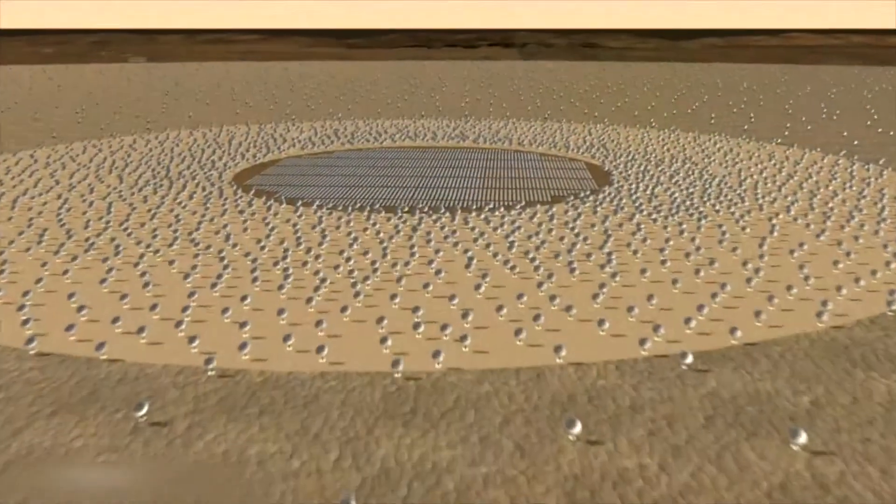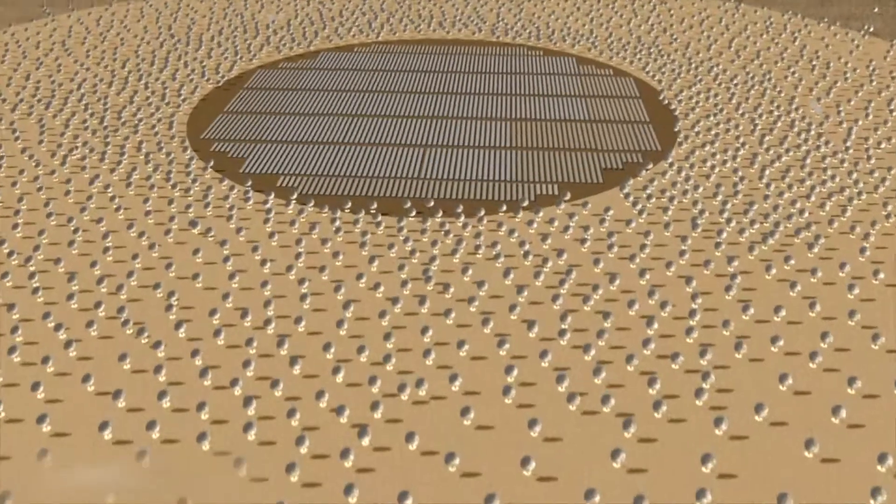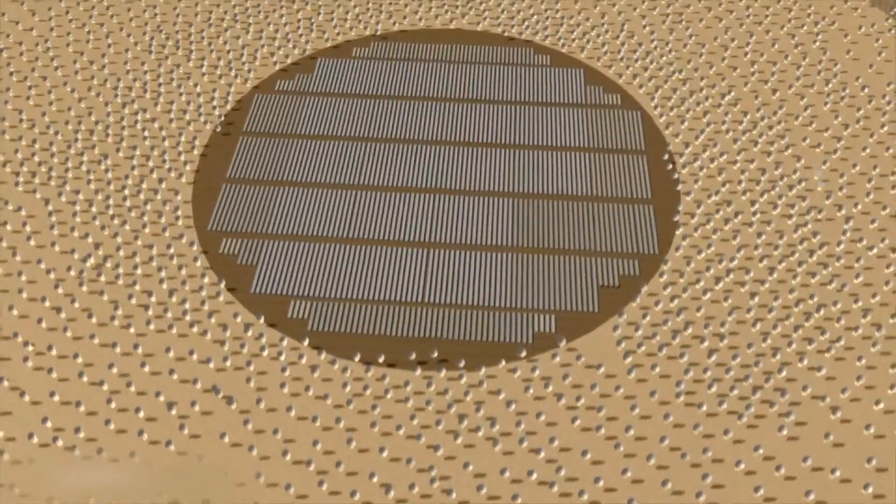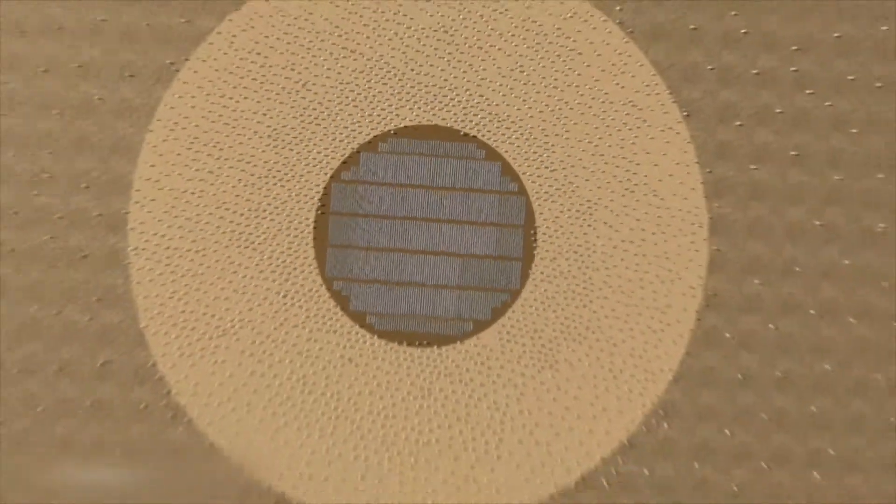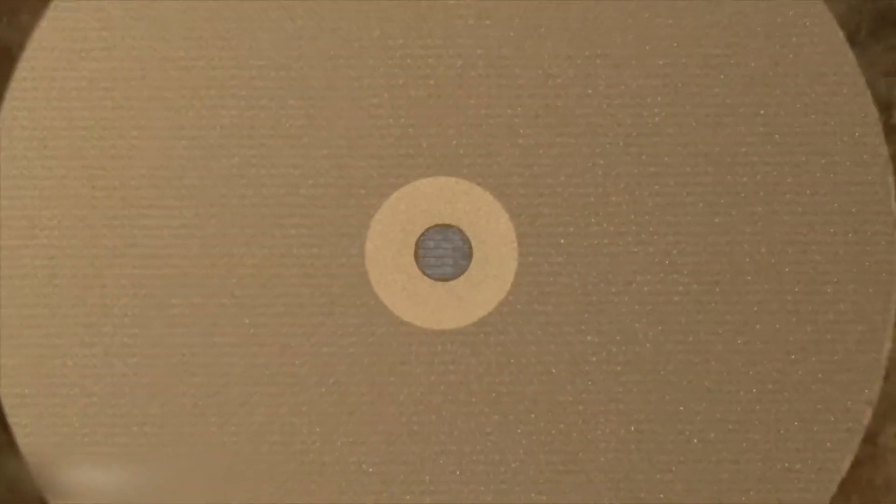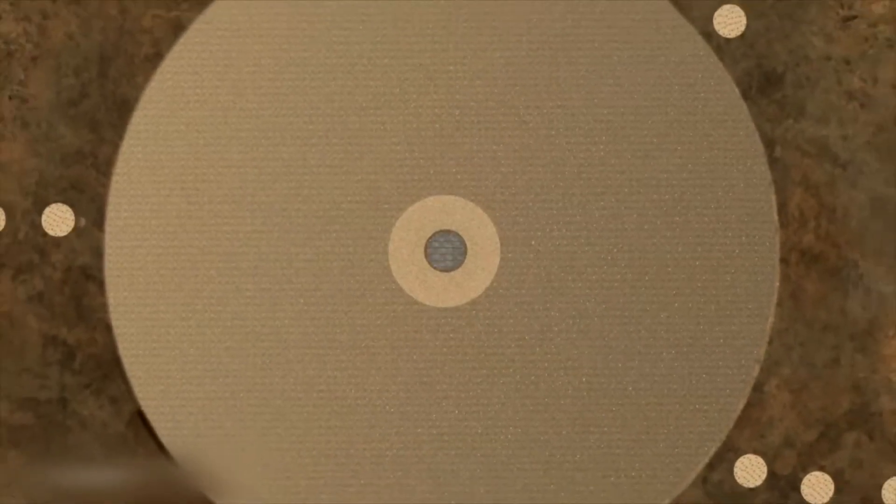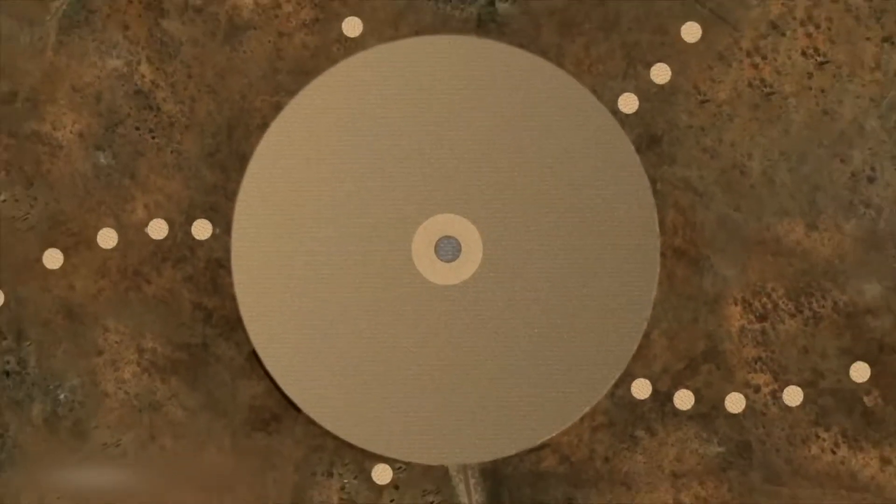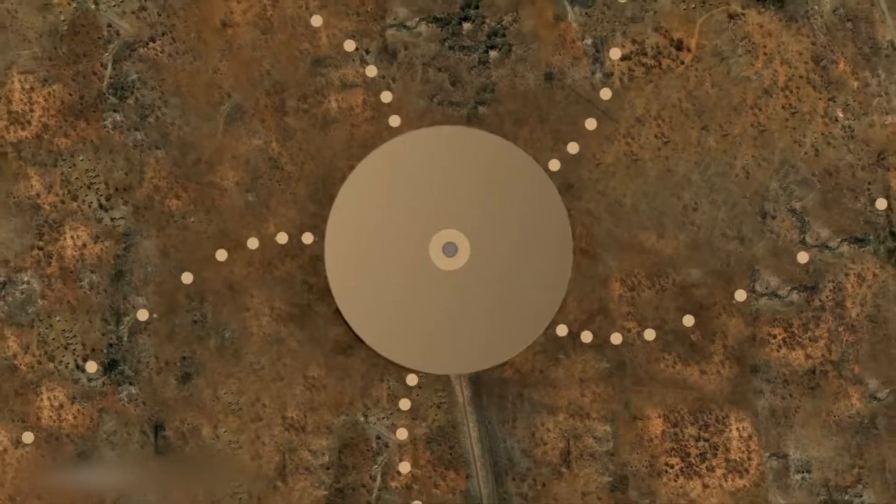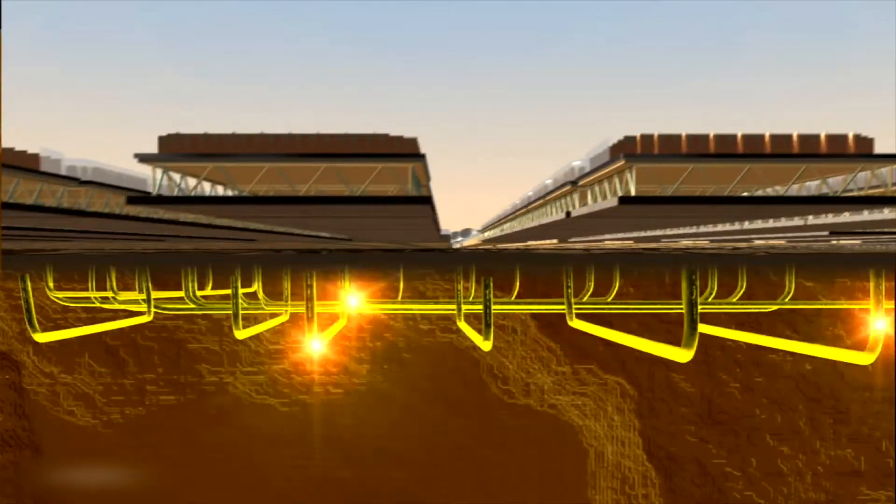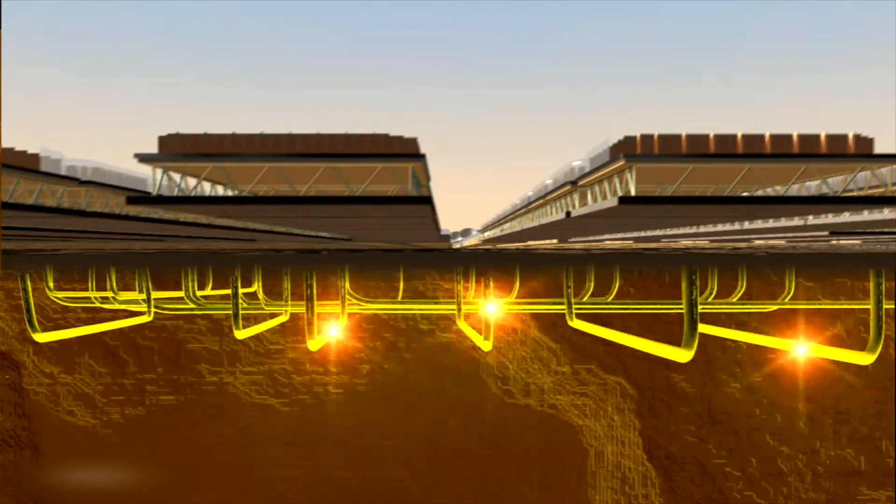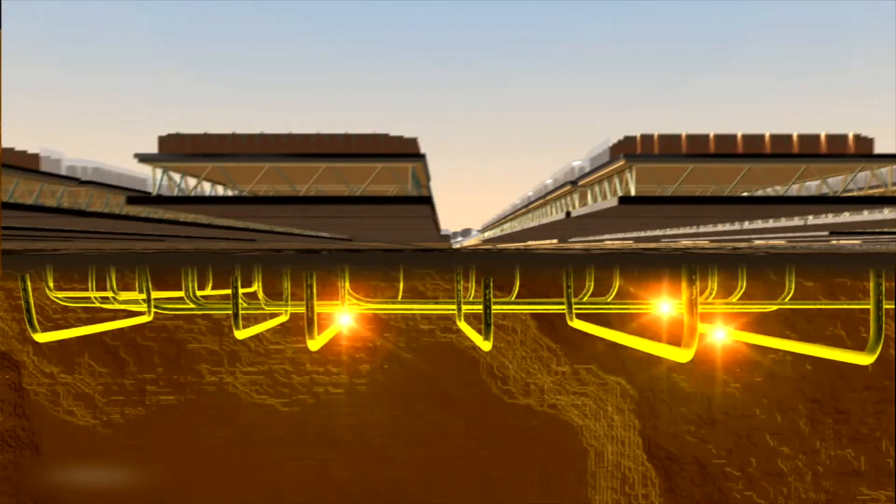LOFAR technology will probably find its way into the square kilometer array, which is now topping the wish list of radio astronomers. The international array will be built in Australia or South Africa. Large dish antennas and small receivers will team up to provide incredibly detailed views of the radio sky. And with a total collecting area of one square kilometer, the new array will be by far the most sensitive radio instrument ever constructed.